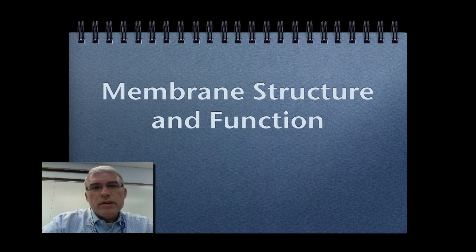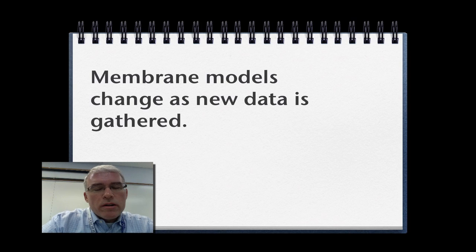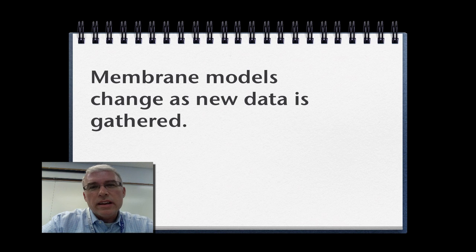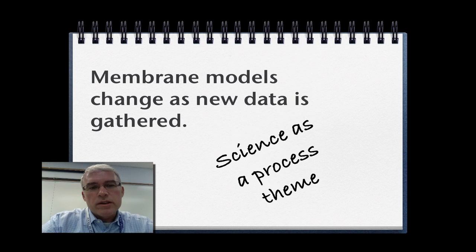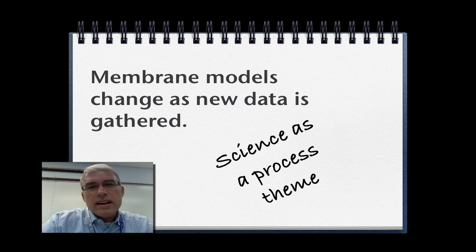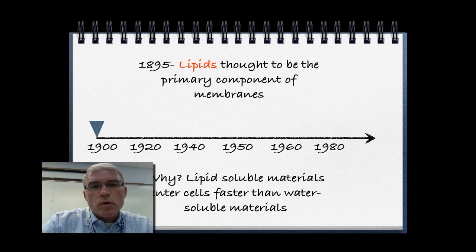Hello, my name is Ed Chapman, and this video cast will cover the first part of Membrane Structure and Function. Our understanding of cell membranes is based on models. Scientists use models to explain things that they can't observe directly, because cell membranes are so tiny, delicate, and difficult to preserve on slides in a way that preserves their structure and function. Scientists have been using models for over 100 years to explain membrane structure, making this a good example of science as a process — one of our important course themes, since science is constantly changing as more data is collected.